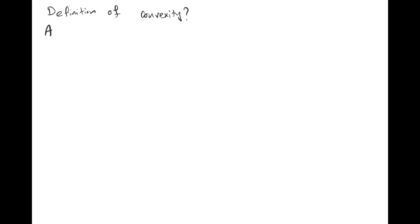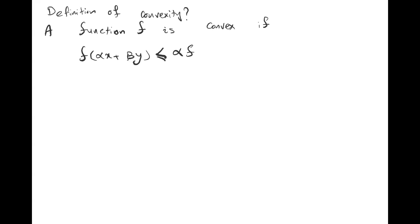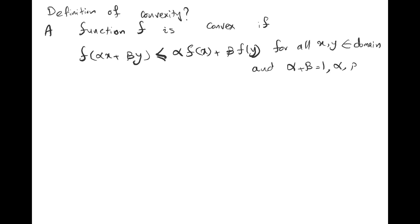Now we want to see what the definition of convexity is — how can we formalize it? The function f is convex if f(αx + βy) ≤ αf(x) + βf(y) for all values of x and y in the domain, where α + β = 1 and both α and β are positive coefficients.